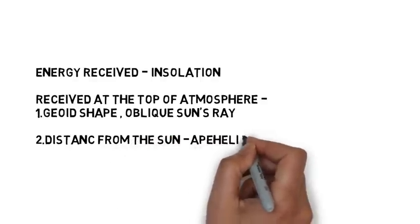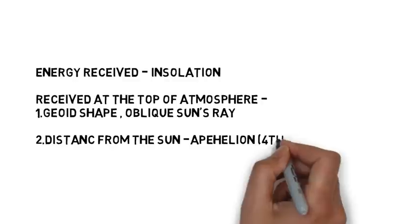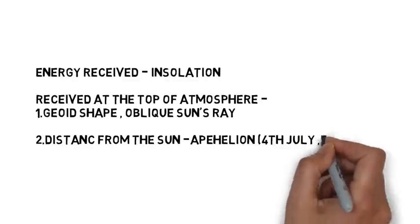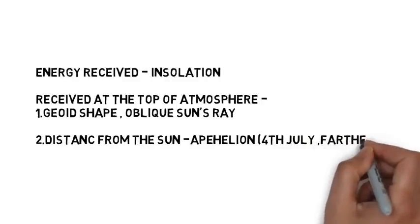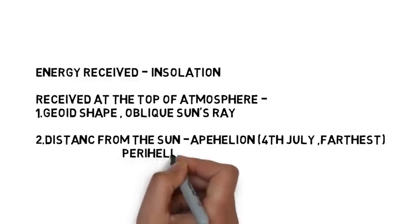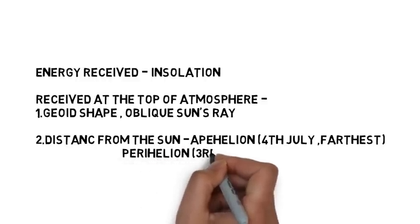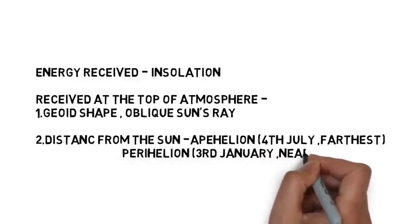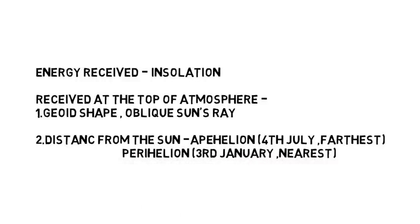Energy received at the top of the atmosphere varies because of two reasons. First, because of the spherical shape of the earth, the sun's rays fall obliquely on the atmosphere and it is a very small portion of the sun's energy that is received by the atmosphere.